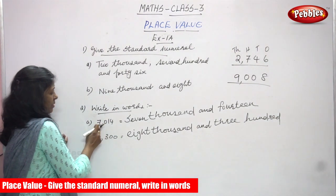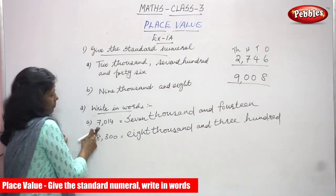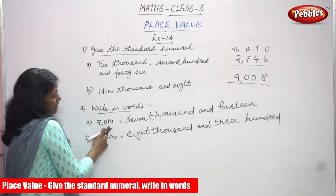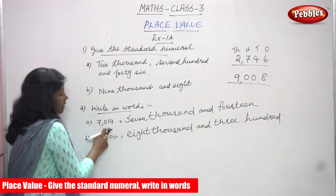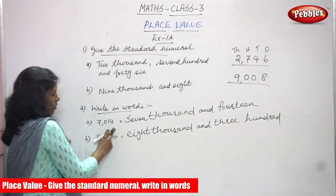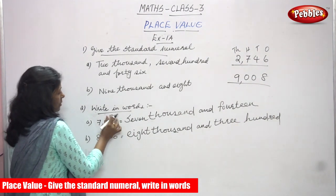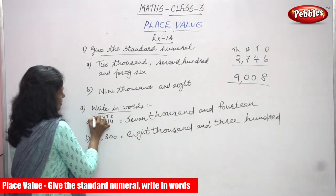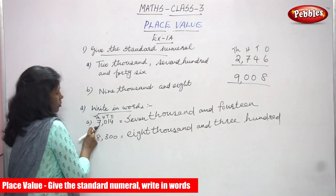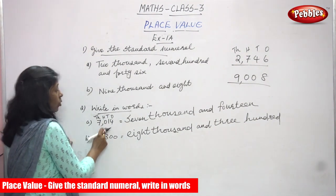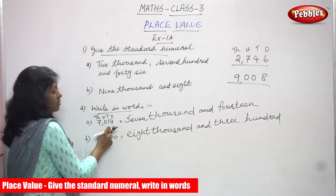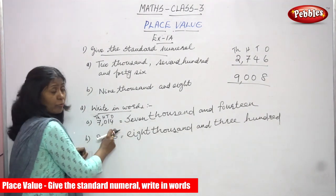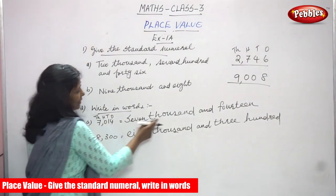So seven thousand and fourteen: ones, tens, hundreds, thousands. Thousands place is seven, hundreds place is zero — no number there. Tens place is one and ones place is four. Thousands place seven, hundreds place zero, tens place one, ones place four. The answer is seven thousand and fourteen.